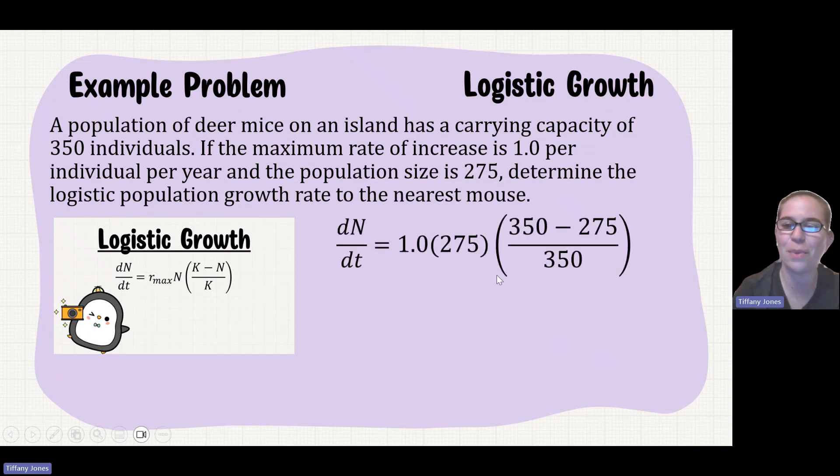First thing, let's sub in our variables. We have 1.0 as our r, sub that in. Our population size is 275, sub that in to those two places. My carrying capacity is 350, and sub that in to those two places.